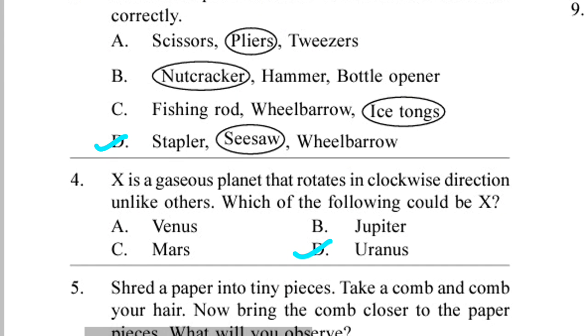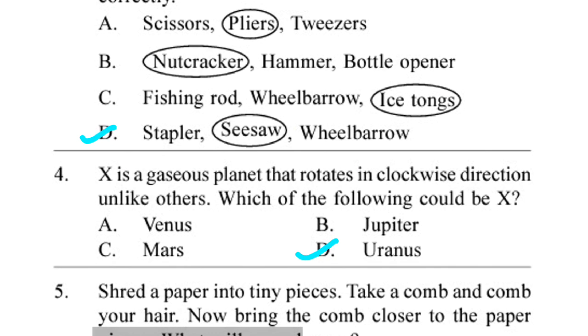Question 4. X is a gaseous planet that rotates in clockwise direction unlike others. Which of the following could be X? Answer is Uranus.